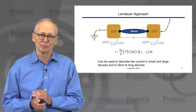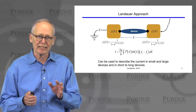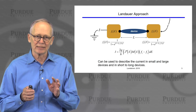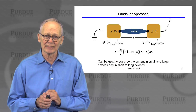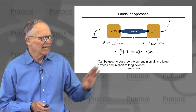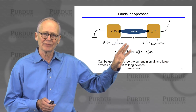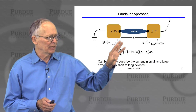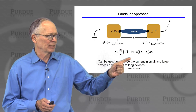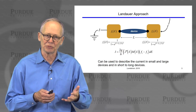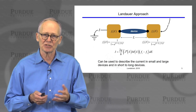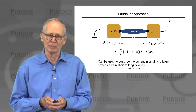We began with a Landauer approach. This is a very important and general way to treat electron transport in small devices and large as well. We discussed — we didn't derive it — but we discussed what it means and where it comes from and what each of the terms in this expression — transmission, number of channels, and Fermi window — what each of those terms was all about.